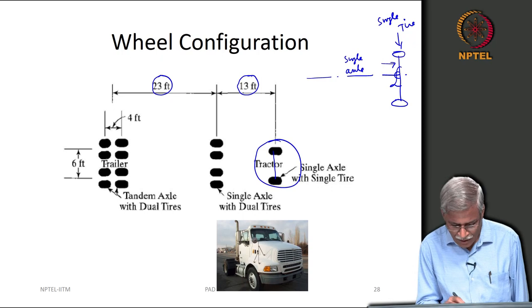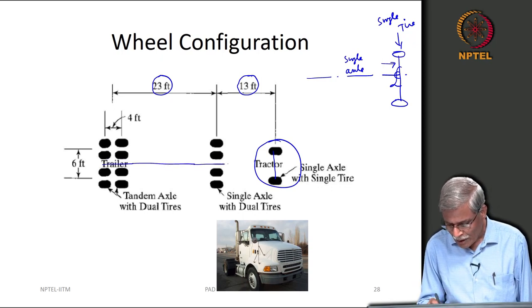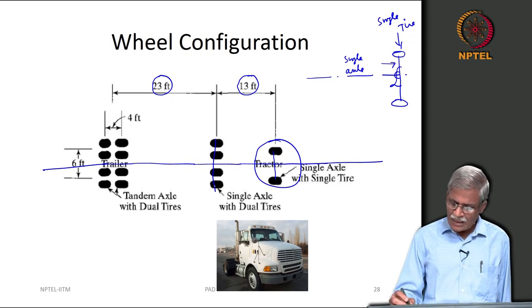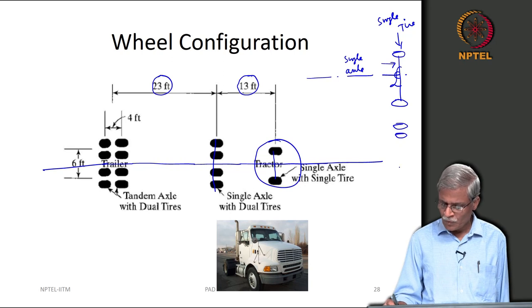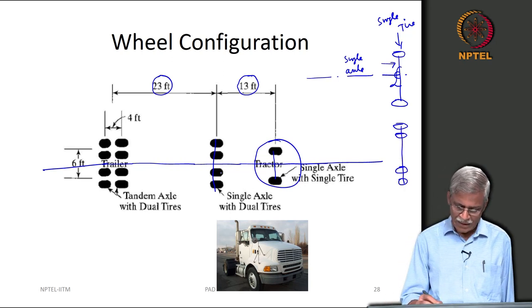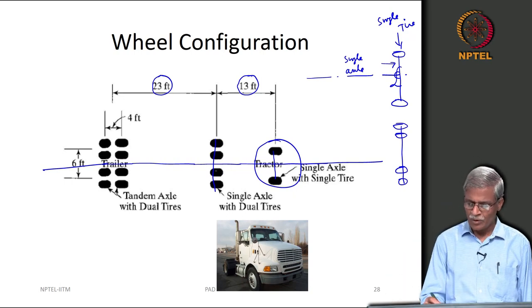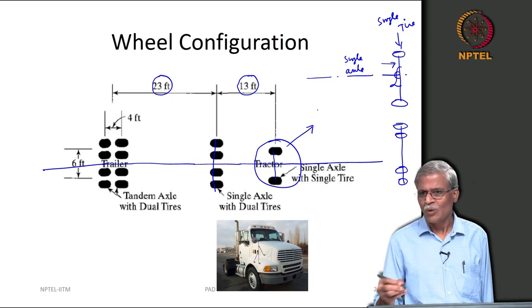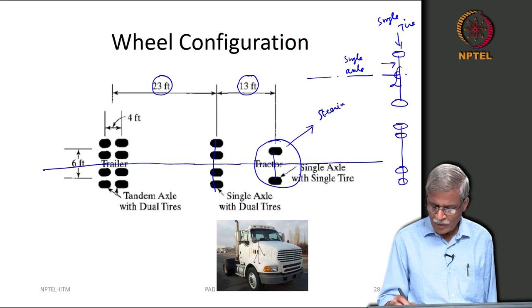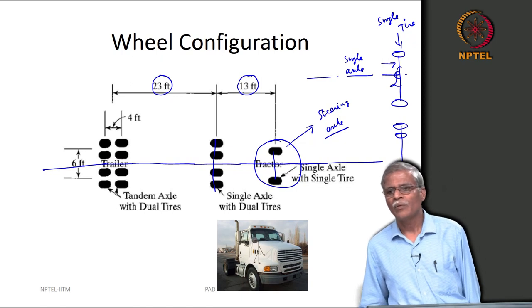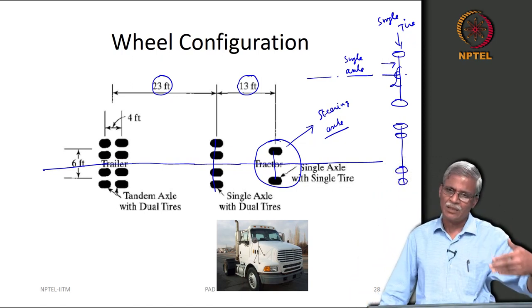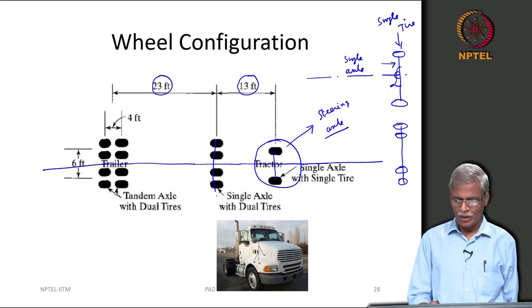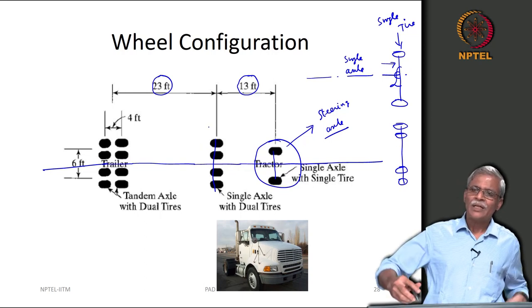The next configuration is single axle with dual tire — one single axle with two tires on either side. To make things easier, we also refer to the tandem axle with the steering axle: the frontmost axle is typically single axle with a single tire, and the rear can be single axle with dual tires.